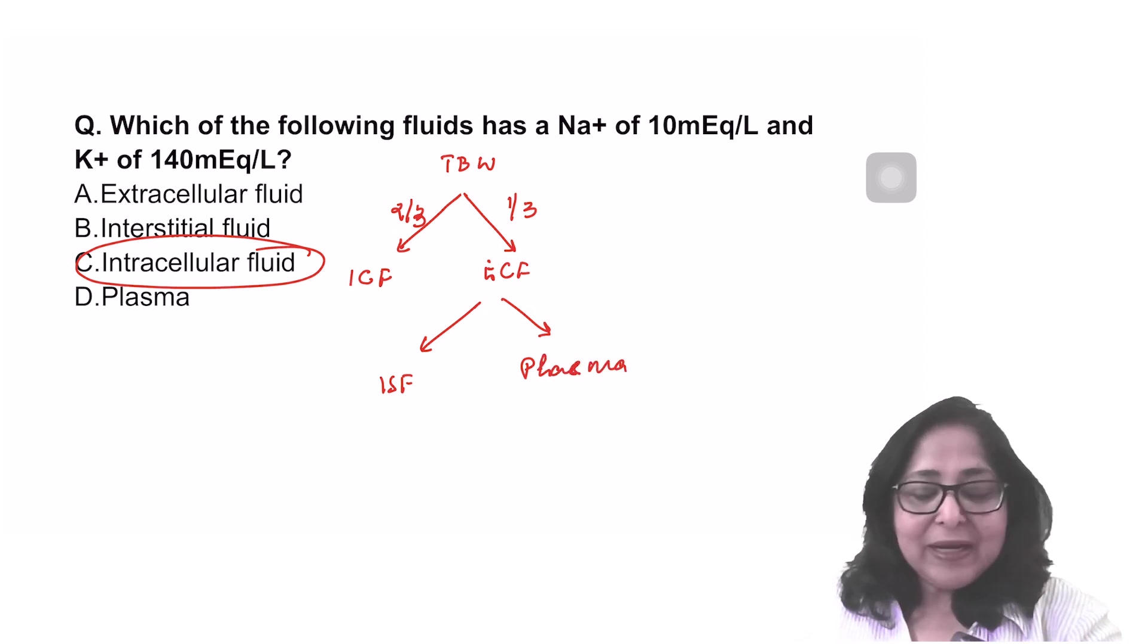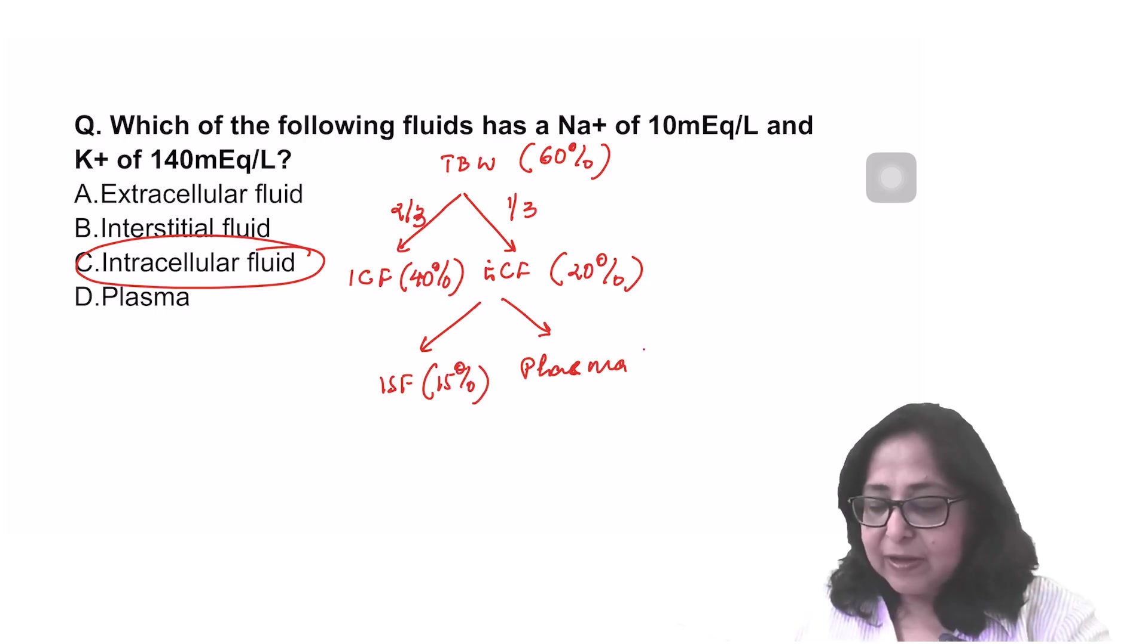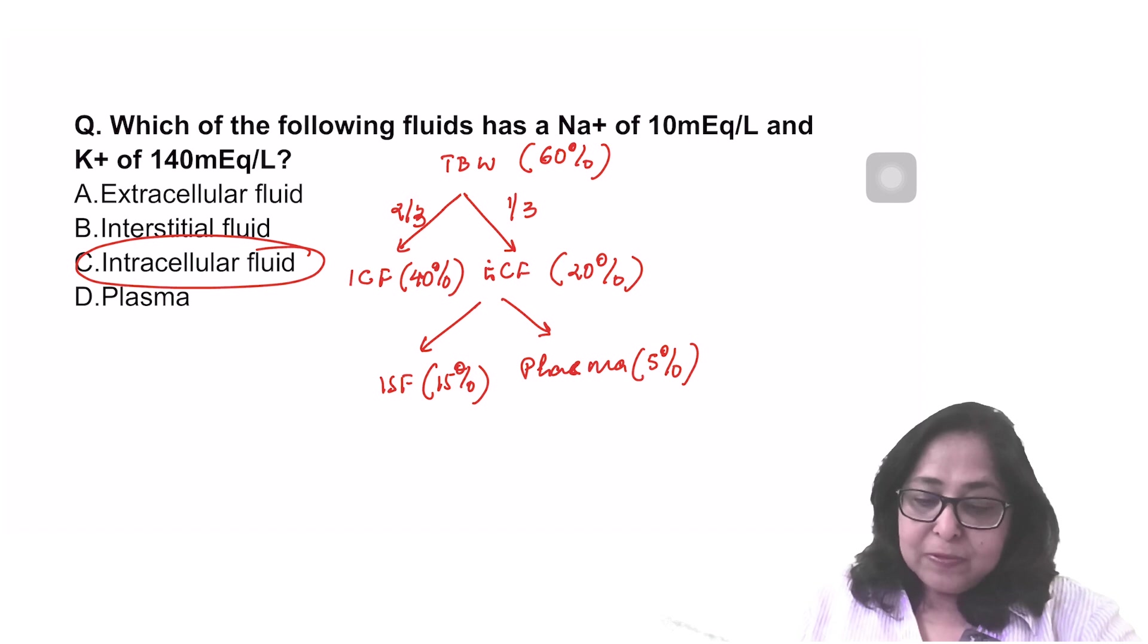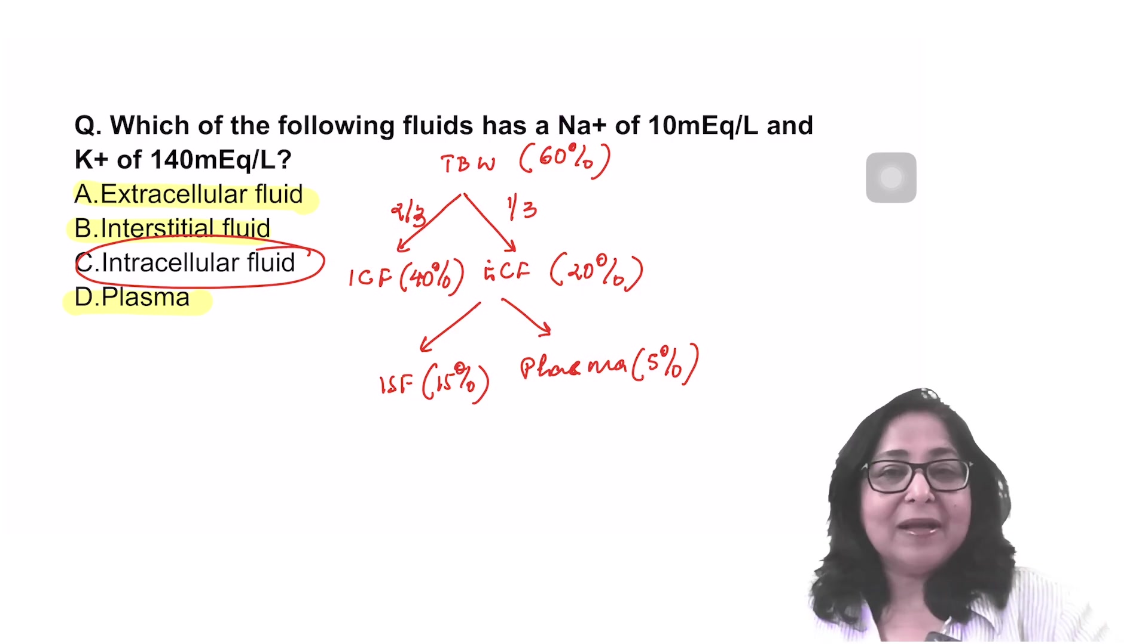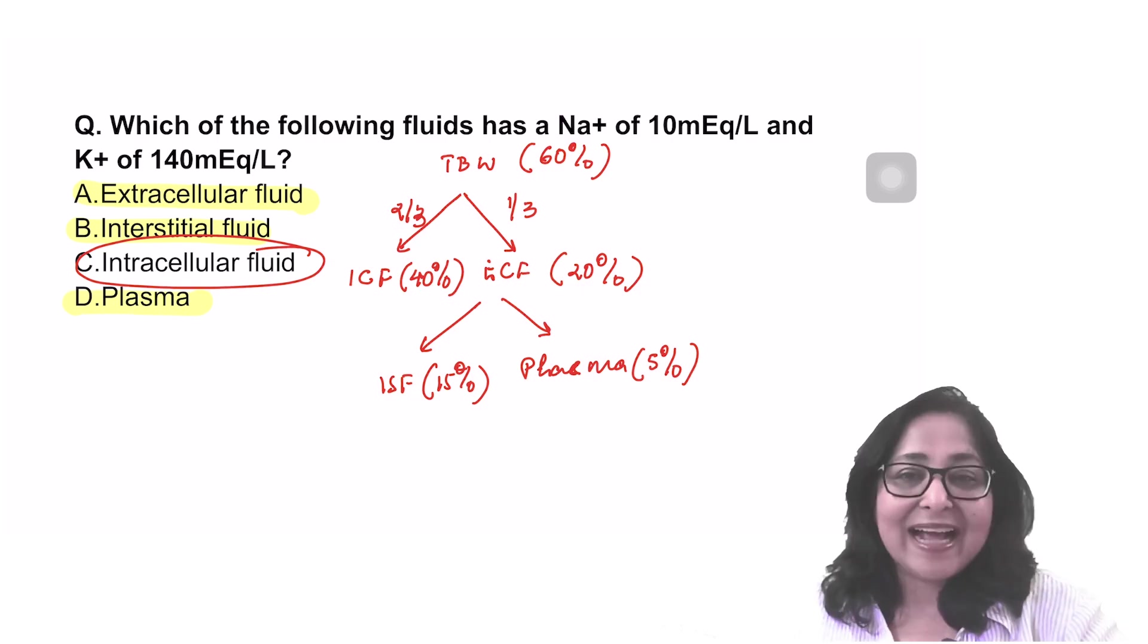When you look at the distribution of total body water, two-thirds of the total body water is in the intracellular compartment and one-third is in the ECF, which consists of interstitial fluid and plasma. In terms of percentages of body weight, total body water is 60% of body weight, ICF is 40%, ECF is 20%, interstitial fluid is 15% and plasma is 5%. In other words, three-fourths of the ECF or 75% is in the interstitial compartment. The composition of the ECF, interstitial fluid and plasma is nearly the same. The major difference is the osmolality is the same, but plasma has proteins while interstitial fluid lacks proteins.